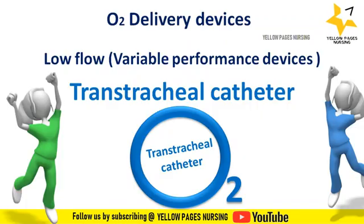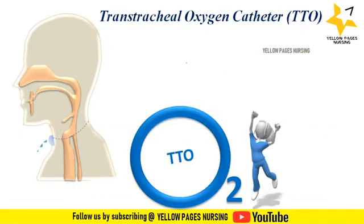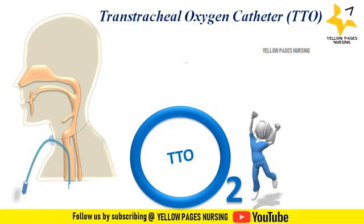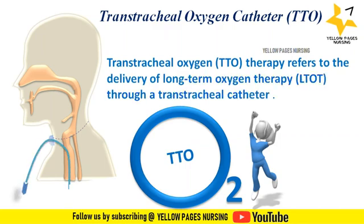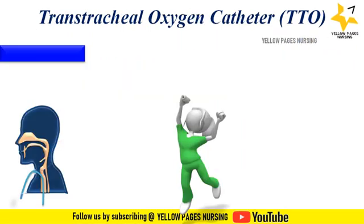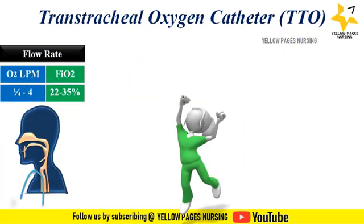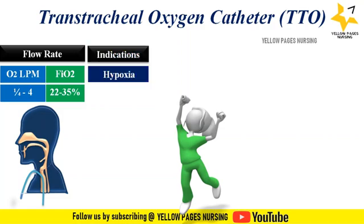Under low flow oxygen devices, next comes transtracheal oxygen catheter. This is a thin catheter inserted surgically with a guide wire between the second and third tracheal ring, as shown in the picture. It is usually used for long-term oxygen therapy or for oxygen-dependent clients. Using a transtracheal oxygen catheter, an oxygen flow rate of about 0.25 to 4 liters per minute can be administered, with which FiO2 of about 22 to 35% can be achieved.